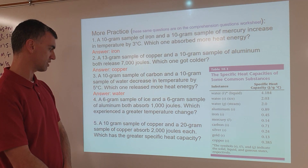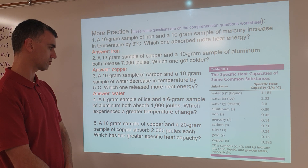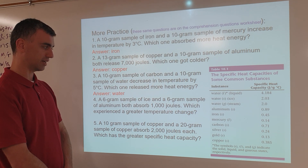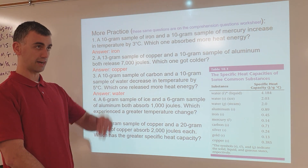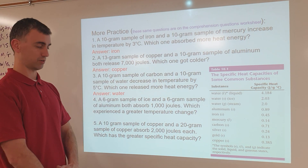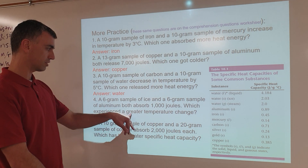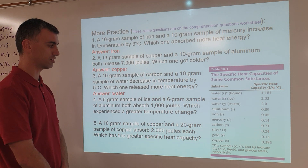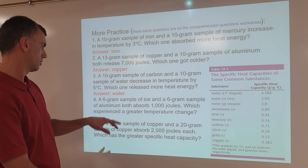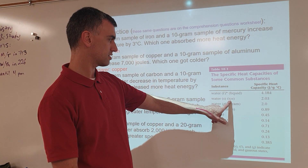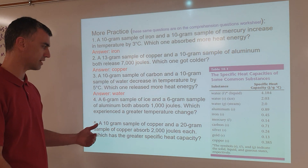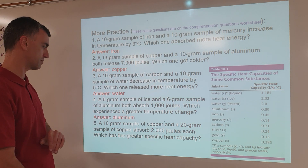A 6 gram sample of ice and a 6 gram sample of aluminum both absorb 1,000 joules — which experiences the greater temperature change? Low specific heat capacity means less resistance to temperature change, so you'll see bigger rises or drops in temperature. The thing with the lowest specific heat capacity will have the greatest temperature change. Ice has a much higher specific heat capacity than aluminum, so aluminum has a lower one — that's why aluminum is the answer.